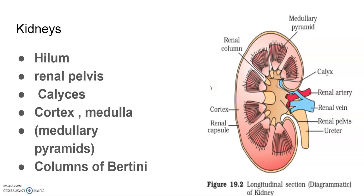Kidneys are reddish brown in color, bean-shaped in structure, and situated at the level of the last thoracic and the third lumbar vertebrae, closer to the dorsal inner wall of the abdominal cavity. Each kidney of an adult measures about 10 to 12 centimeters in length, 5 to 7 centimeters in width, and 2 to 3 centimeters in thickness, with an average weight of 120 to 170 grams.